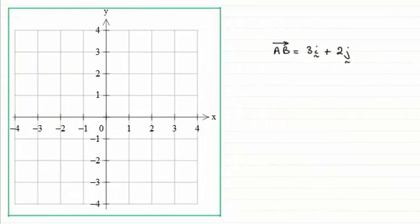Hi. Now in this video I want to talk to you about position vectors. But first of all, let's suppose we had a vector AB which equaled 3i plus 2j.